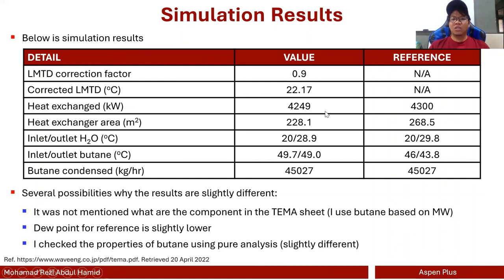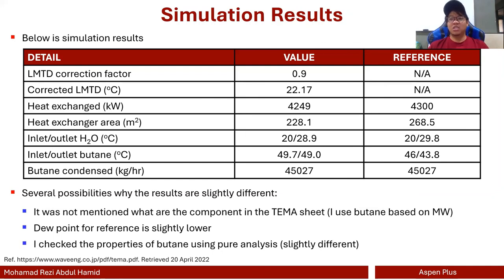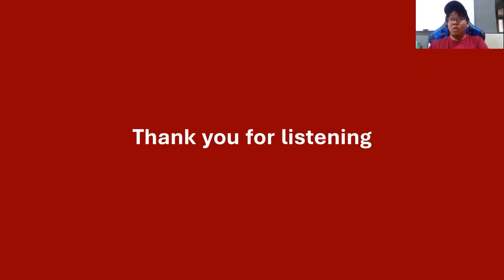Those are the factors contributing to the differences in heat exchanged and heat exchanger area. The LMTD correction factor was not specified in the datasheet because geometry wasn't provided. I did confirm that even though I chose butane, the thermophysical properties are slightly different — not because of an incorrect property method, but because the reference fluid is not explicitly identified. It's essentially an apples-to-oranges comparison, even though the properties are roughly similar. That's all for today — if you liked the video, give it a thumbs up and consider subscribing. I'll see you in the next video. Bye-bye, and happy Hari Raya!